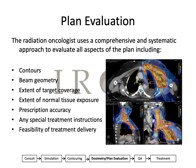Then, looking at your beam geometry — sometimes there'll be a beam that's passing through an organ at risk that you could re-angle to minimize dose there. Look at the extent of target coverage: is there a cold spot that's actually quite important, or is it too hot in an area that's close to a normal tissue? Of course, your normal tissue constraints are important, and there are many places where you can look for dose constraints such as in Quantec or prior disease site protocols. Your department might also have a list readily available.